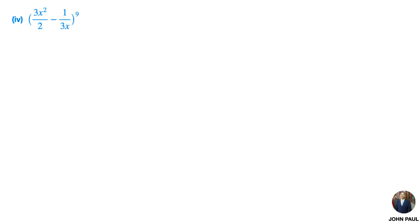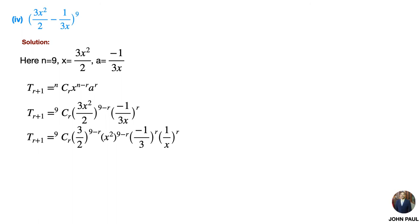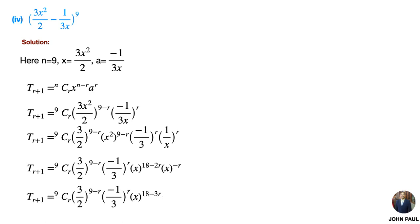Fourth problem: (3x²/2 − 1/3x)⁹. Solution: here n = 9, x = 3x²/2, and a = −1/3x. Using the general term formula, we substitute and simplify. Taking the power inside for (3x²/2)^(9−r) and (−1/3x)^r, then grouping only x terms, we get x^(18−3r).